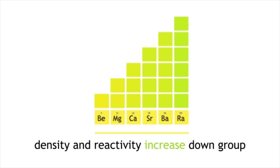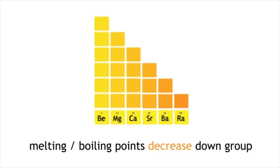Moving down the group, their density and reactivity increases. Melting points and boiling points decrease, and the metals become softer. We will now learn about the reactions of magnesium and calcium with oxygen and water.